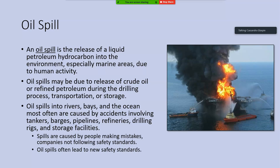To define an oil spill: it is the release of a liquid petroleum hydrocarbon into the environment, especially in marine areas, because these spills tend to be the most severe as they spread all over the place, but also on land. These spills have to happen due to human activity to be considered an oil spill — natural release of oil from oil seeps is not an oil spill.